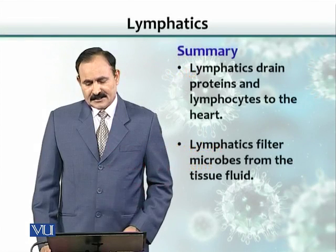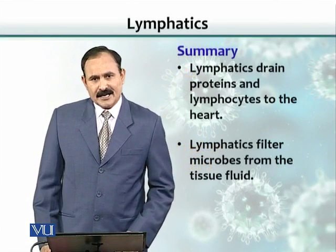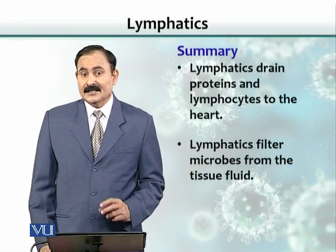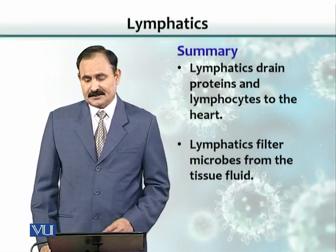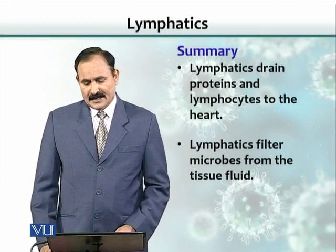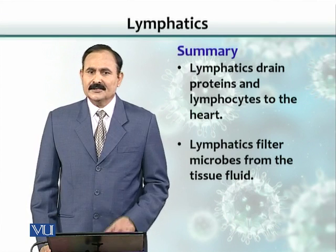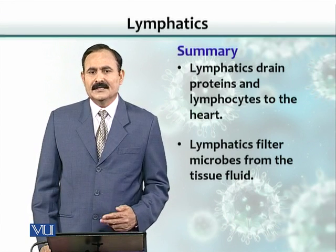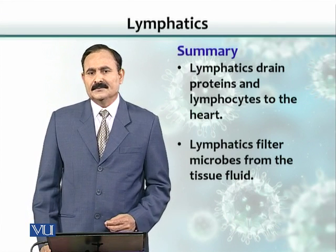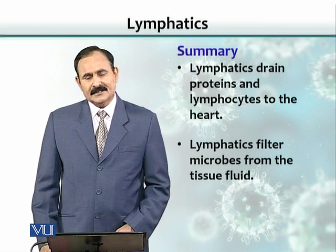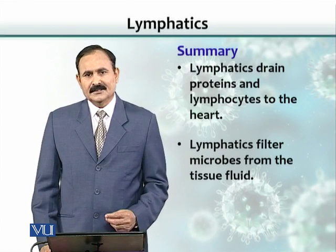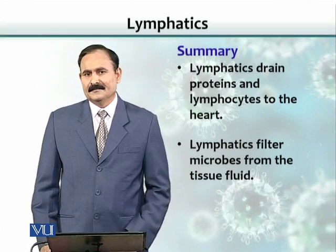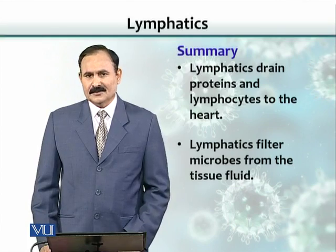In summary, lymphatics drain the proteins that leak out of the blood vascular system, and there is a continuous circulation of lymphocytes and various other immune system cells. Lymphatics filter the lymph; the spleen filters the blood. Thank you.